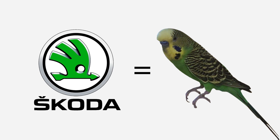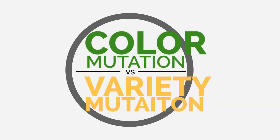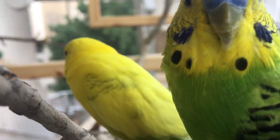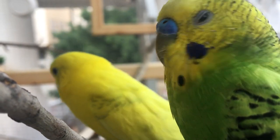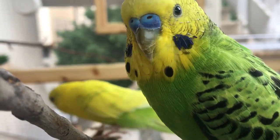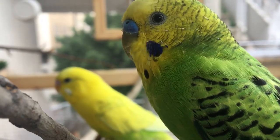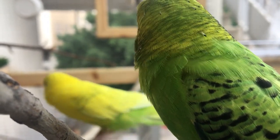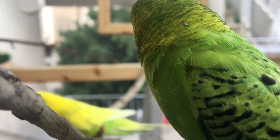Let's now understand what's the difference between color mutation and variety mutation. The color mutation is basically looking only at your budgie's color — is it yellow, is it sky blue, is it dark green? It's like when you go to buy a Skoda and you choose what color you want your car to be.